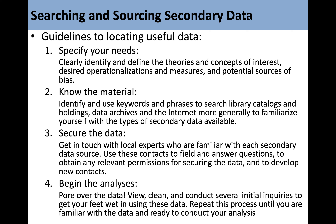Guidelines for locating useful secondary data: first, specify your needs — clearly identify and define the theories and concepts of interest, desired operationalizations, and measures and potential sources of bias. Second, know the material — identify and use keywords and phrases to search library catalogs, data archives, and the internet to familiarize yourself with the types of secondary data available. Third, secure the data — get in touch with local experts familiar with each secondary data source, use these contacts to answer questions and obtain relevant permissions. Fourth, begin the analyses — pour over the data, conduct several initial inquiries to get familiar with it, and repeat this process until you are ready to conduct your analysis.